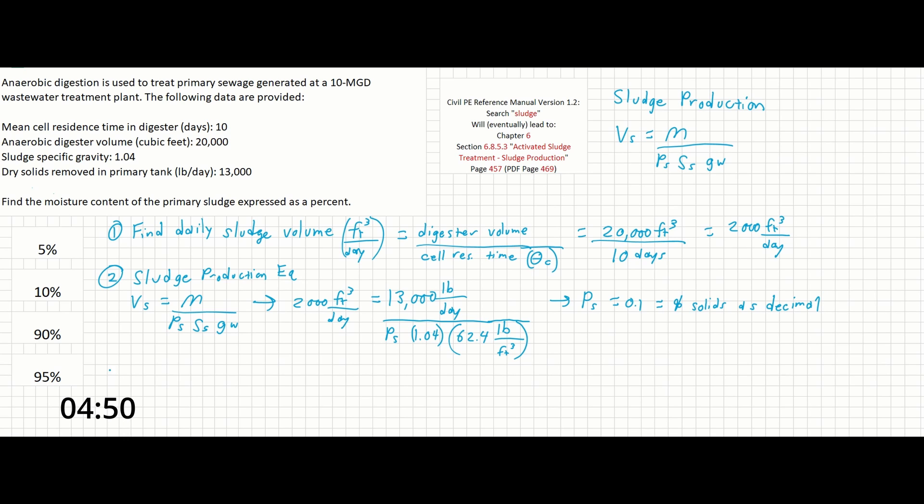To finalize this problem, all we need to do is find the moisture content instead of the percent of solids. The moisture content equals 1 minus the dry component equals the wet component. In this case, that's going to be 1 minus 0.1 to give us 0.9 or 90 percent. We can see over here that this is the third answer.